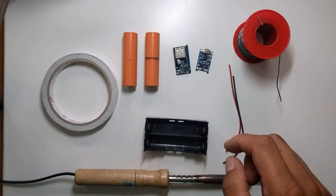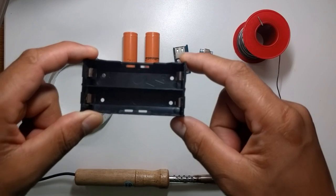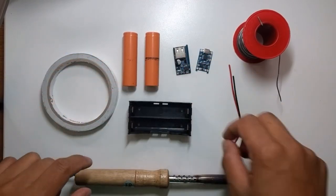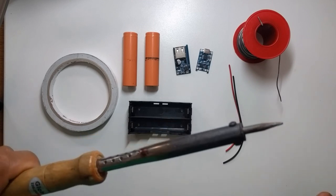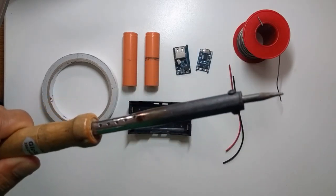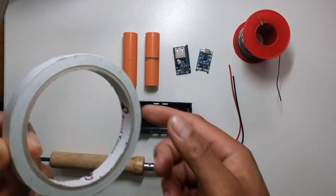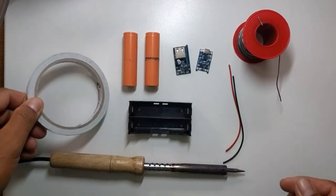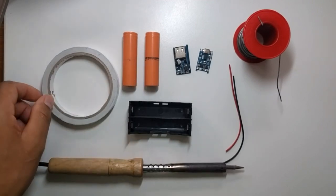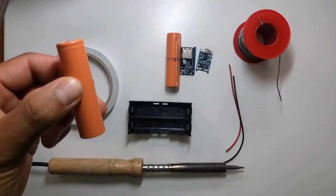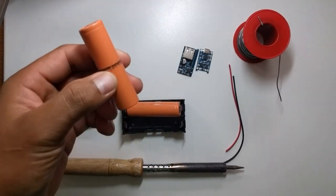Here's the things that we need: 18650 battery holder, soldering iron - be careful not to touch the tip when it's hot - a double sided tape, you can use hot glue if you prefer, and 18650 battery, we need two of these.